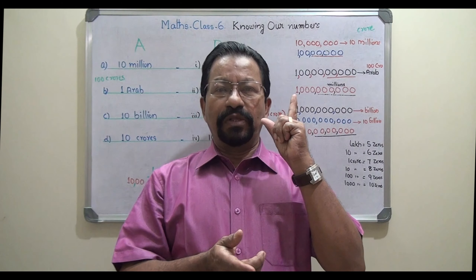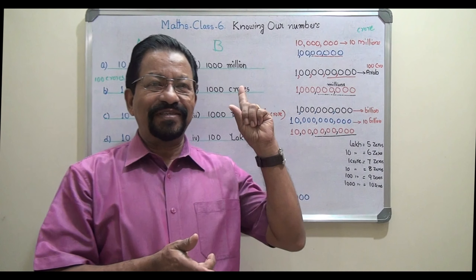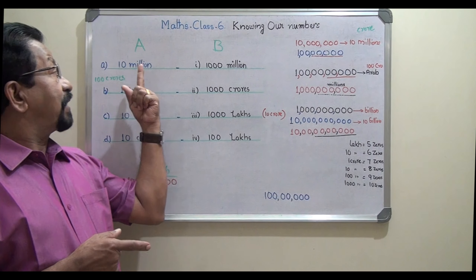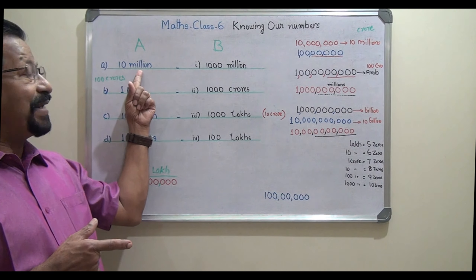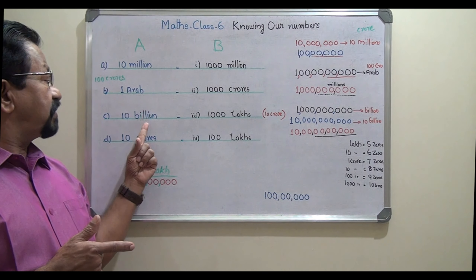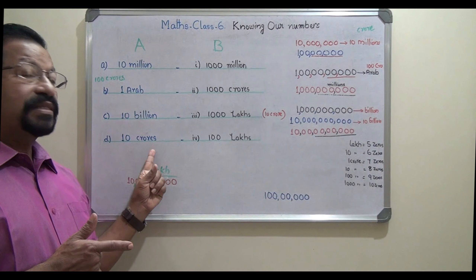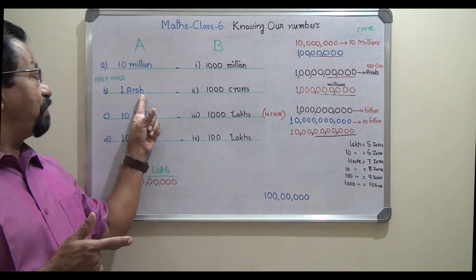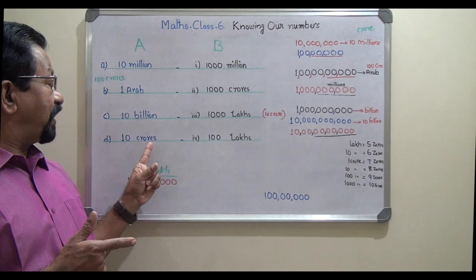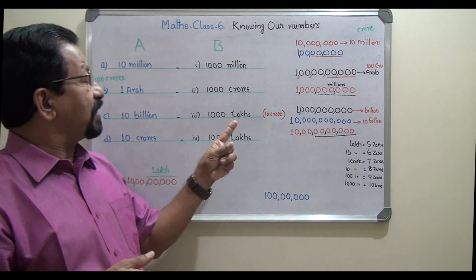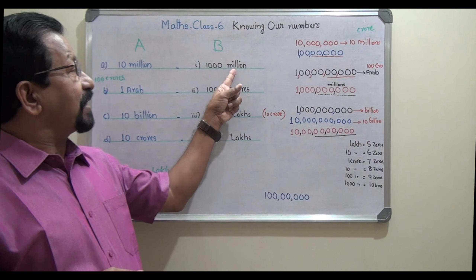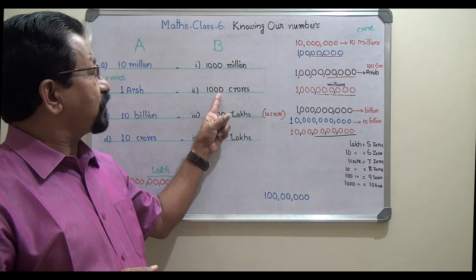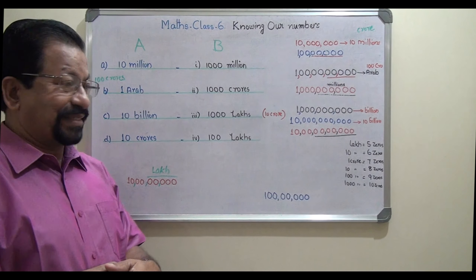Now look into the board. For the match-the-following, there are four questions in Column A: 10 million, 1 Arab, 10 billion, and 10 crores — mixing international and Indian number systems. The answer choices given on the right-hand side are: 1000 billion, 1000 crores, 1000 lakhs, and 100 lakhs.